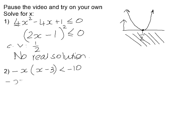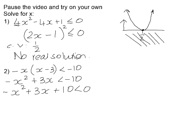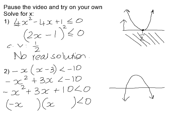Number two: we first need to get this into standard form, so it becomes negative x squared plus 3x is less than negative 10. Moving negative 10 across gives us positive 10. Because the coefficient of x squared is negative, the graph is a frowning parabola. We can factorize to find critical values: we need negative x times positive x, and using positive 5 and positive 2, the outers give negative 2x, the inners give positive 5x, which sums to positive 3x. So our critical values are positive 5 and negative 2.